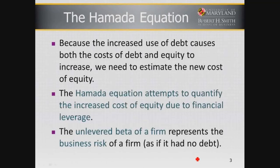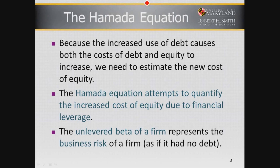The reason we're using the Hamada equation is because increased use of debt will cause the cost of debt and equity to go up. The Hamada equation is an attempt to quantify this increased cost due to financial leverage — meaning the use of debt. The unlevered beta of the firm represents the business risk as if it had no debt. The unlevered beta is also called the asset beta.